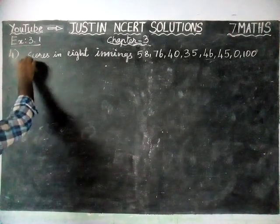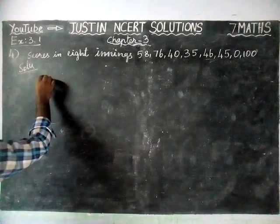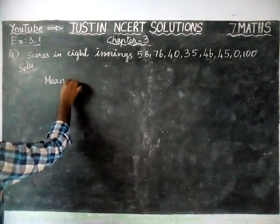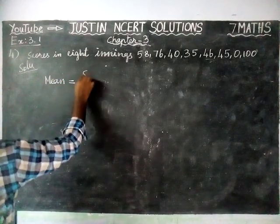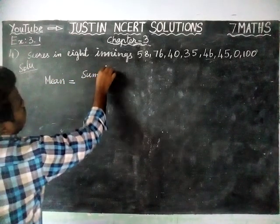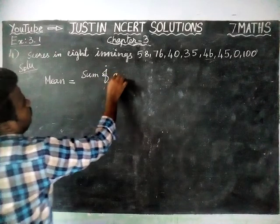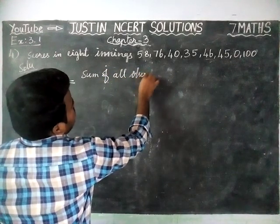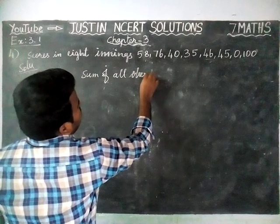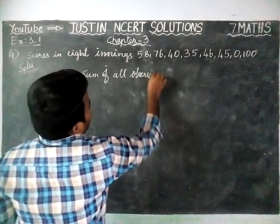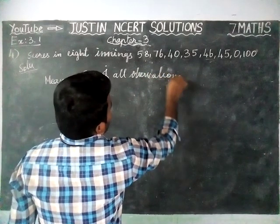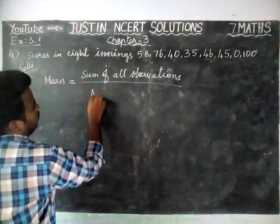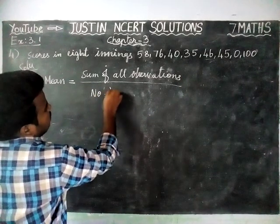First, we are going to find the meaning of mean. Mean is equal to the sum of all observations divided by the number of observations.